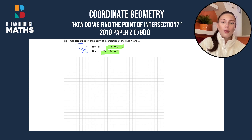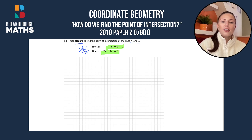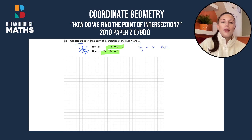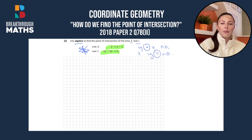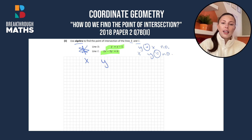A really important thing to notice here is that the equations are arranged in different ways. The first equation has y equal to x and then the number, but the second equation has its x and y equal to a number. So the equals signs are in different places. We want both in the form x, y equal to a number, so we'll arrange them both this way now.